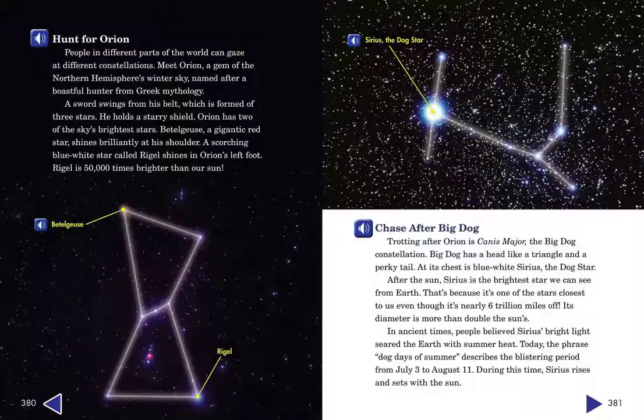Chase after Big Dog. Trotting after Orion is Canis Major, the Big Dog constellation. Big Dog has a head like a triangle and a perky tail. At its chest is blue-white Sirius, the dog star. After the sun, Sirius is the brightest star we can see from Earth. That's because it's one of the stars closest to us, even though it's nearly six trillion miles off. Its diameter is more than double the sun's.